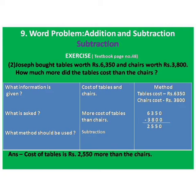What information is given? Ka information di li li aahe? Cost of tables and chairs. What is asked? Ka ii vichar le — more cost of tables than chairs. Manje chairs peksha tables chi cost kiti jasht aahe? What method should be used? Subtraction.